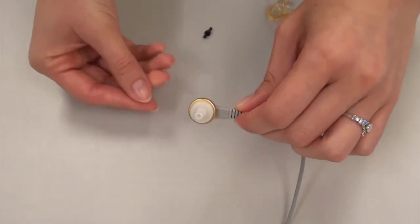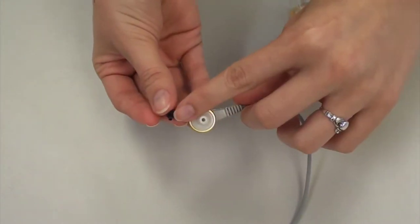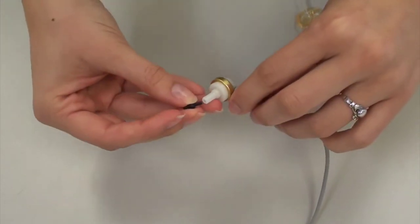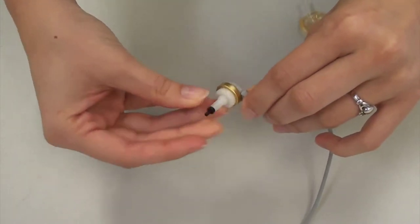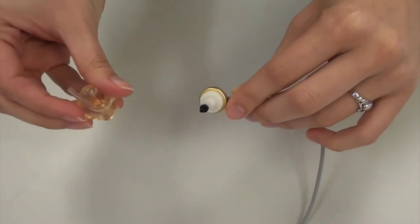First, attach the white ear tip to the end of the button receiver. Then attach the black tube nipple to the white ear tip. You can then insert the nipple into the ear mold tubing.